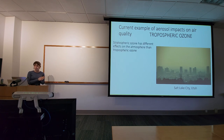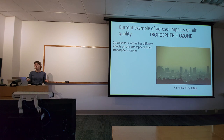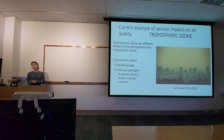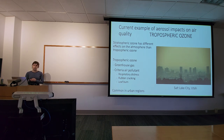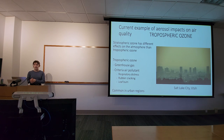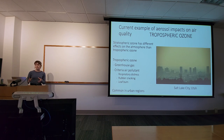Stratospheric ozone is the ozone in the ozone layer protecting us from UV radiation, but in the troposphere, ozone has a different role. It's a greenhouse gas and a criteria air pollutant — it can cause respiratory distress, rubber cracking, and leaf burn, so it's harmful to vegetation as well. It's really common in urban regions. Salt Lake City, Utah is one example where we see really intense ozone events, and that's what I'll be focusing on.